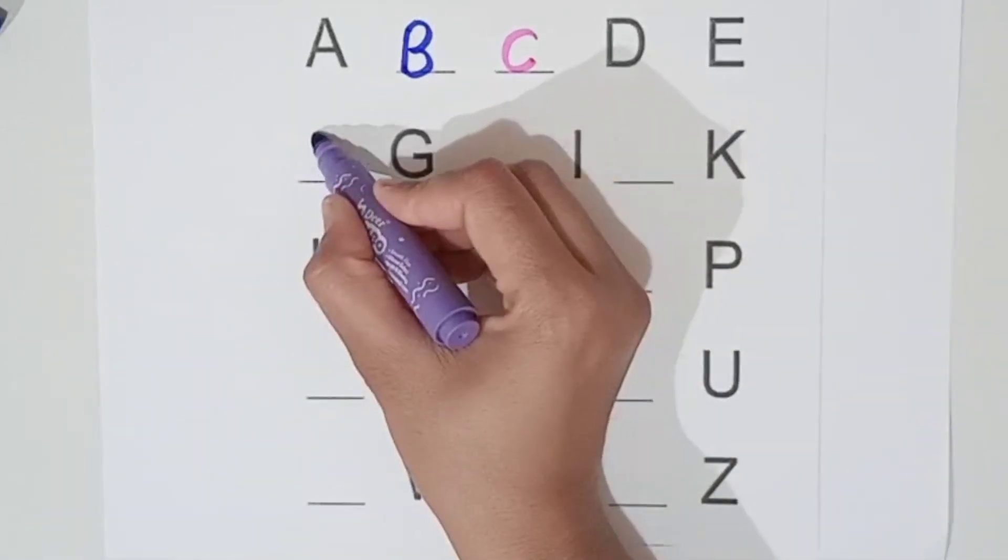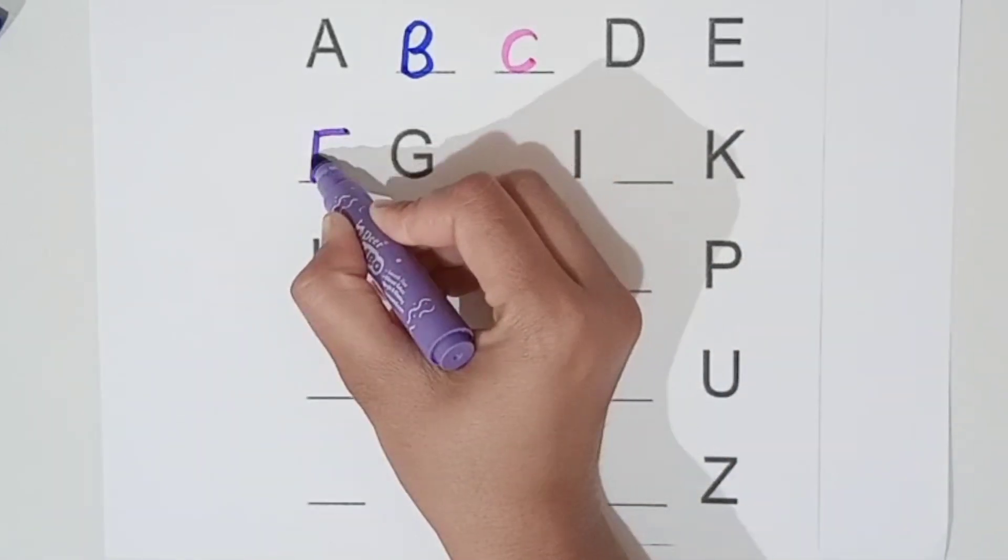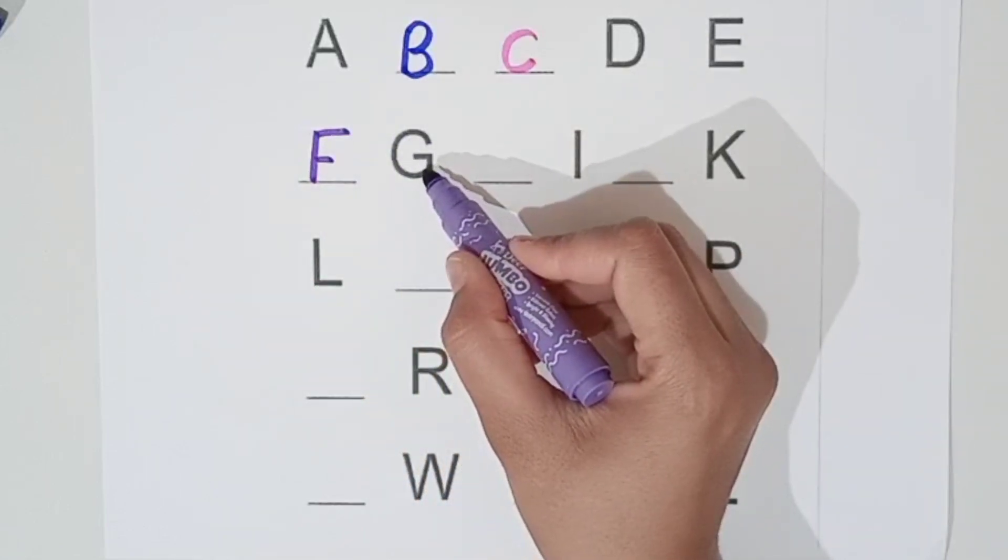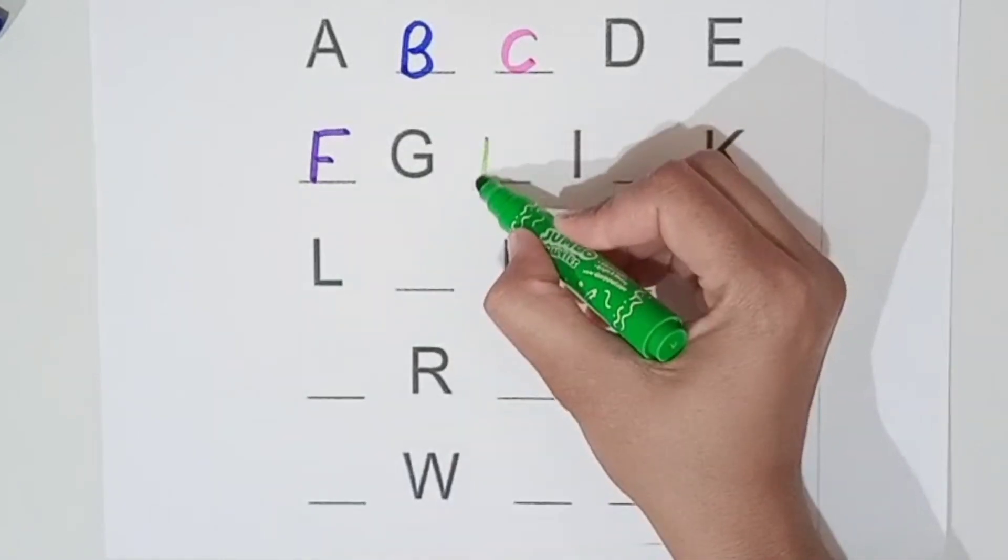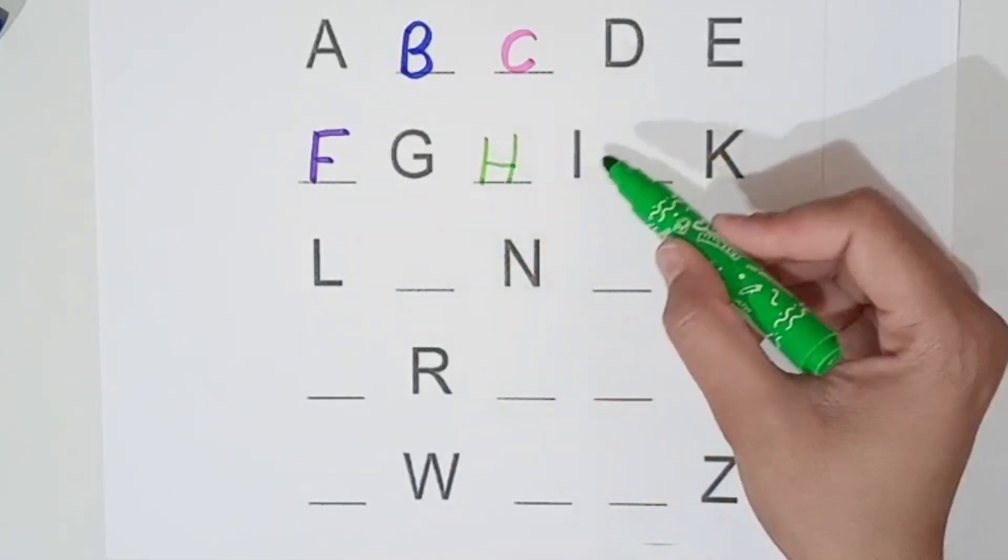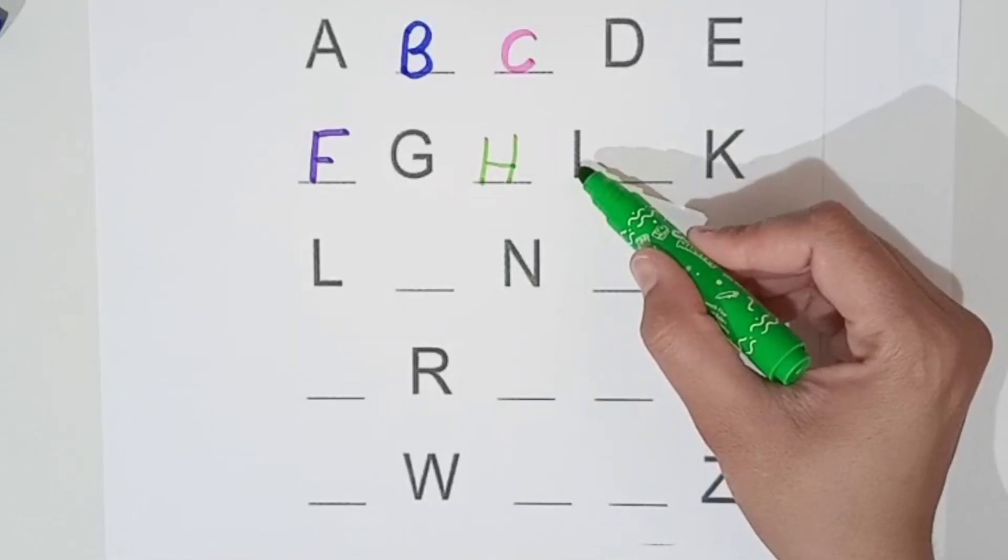Purple color. F, F for frog. G, G for gate. H, H for hat. I, I for iron.